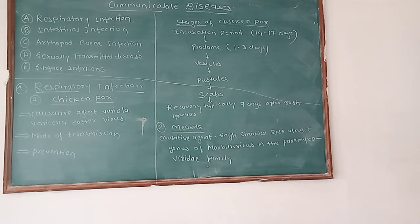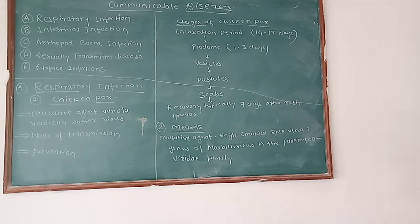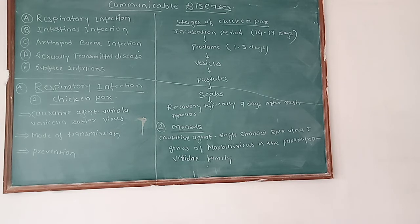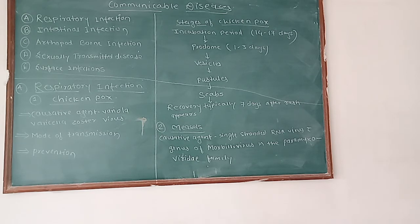So, what is the communicable disease? It is a disease that spreads from one person or animal to another — from one person to another. This is communicable disease.